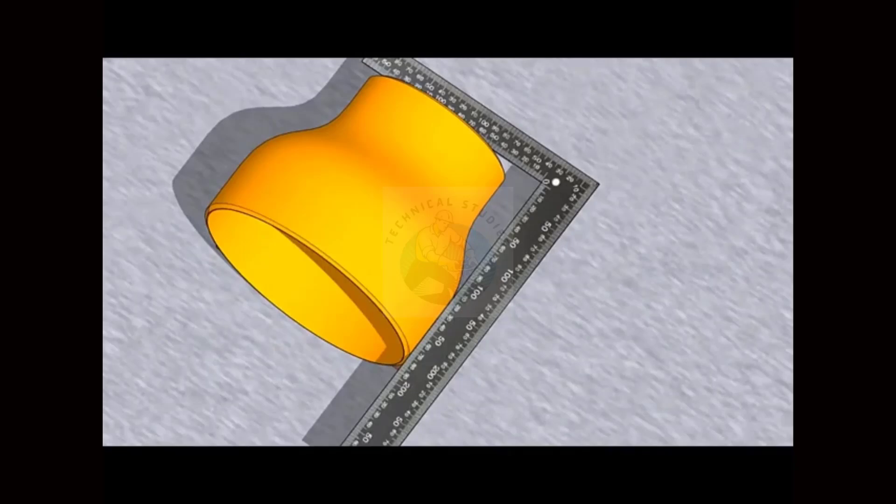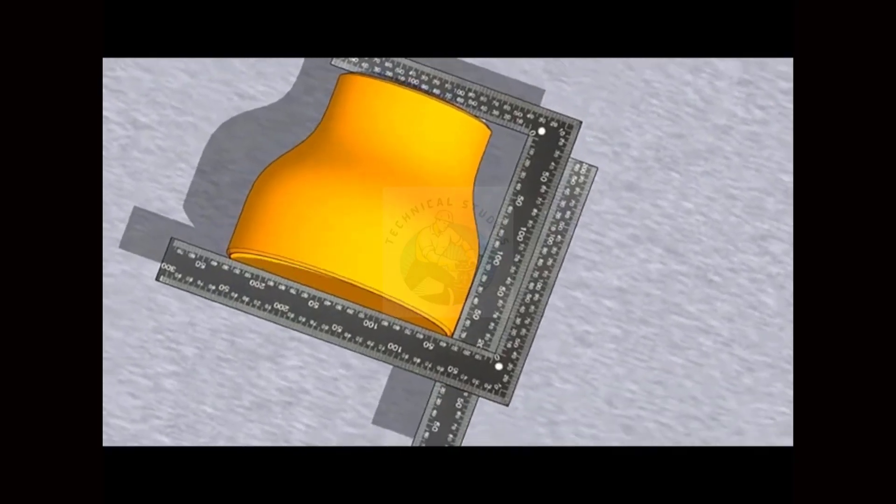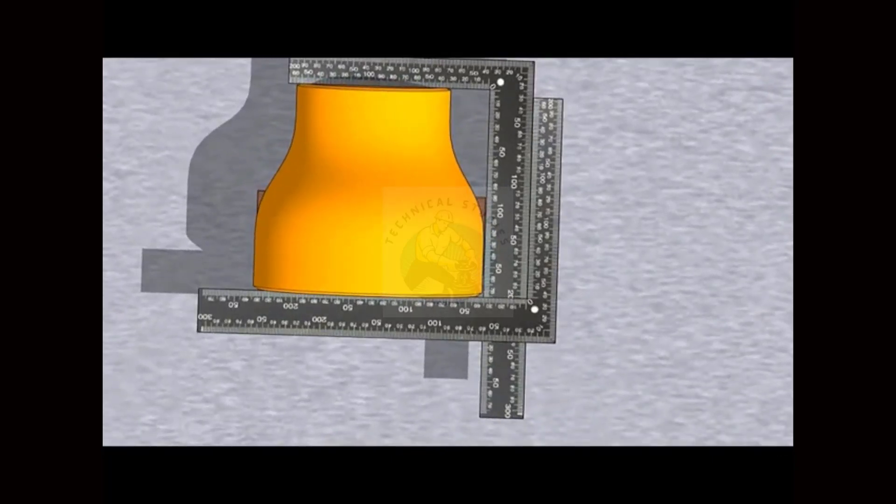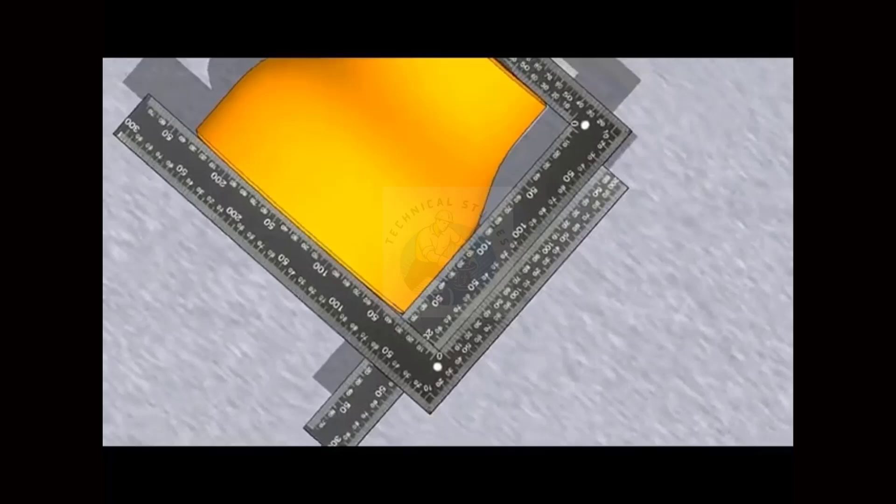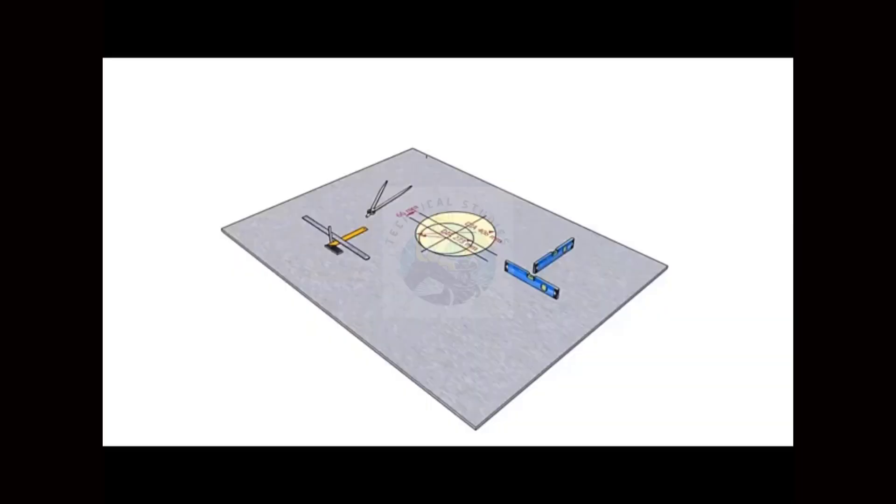Now hold another right angle at the other end, as shown. Check if the other hands of the right angle are parallel to each other. The reducer is almost okay.